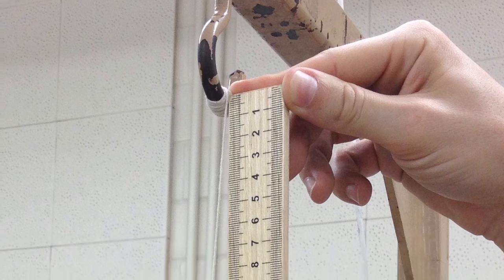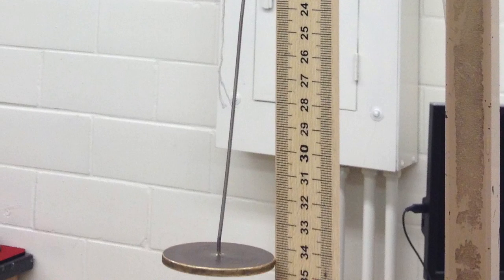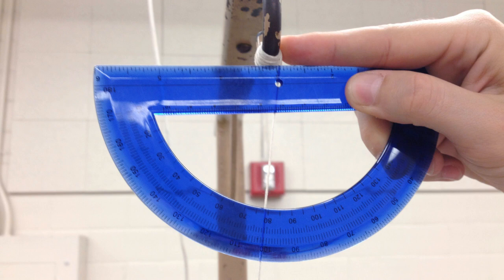You'll need to measure the length of the pendulum from the rotation point to the center of mass. Use a protractor when angle is important. You'll be able to use your measurements to find g, the gravitational constant on earth.